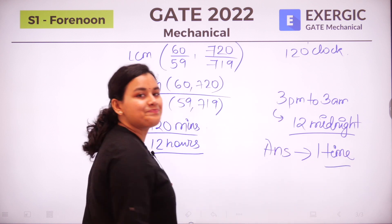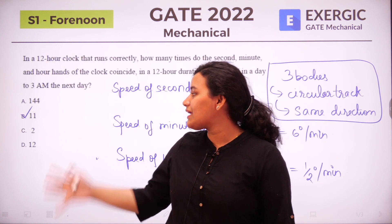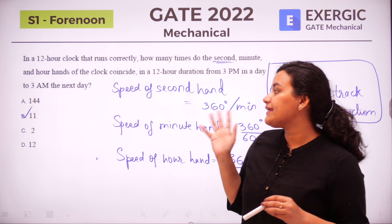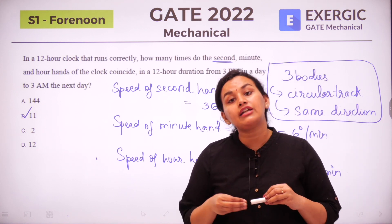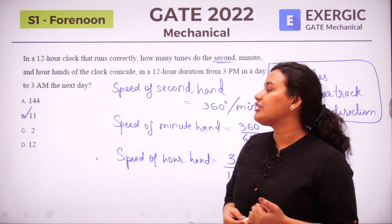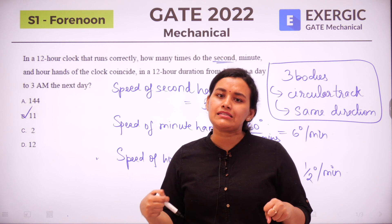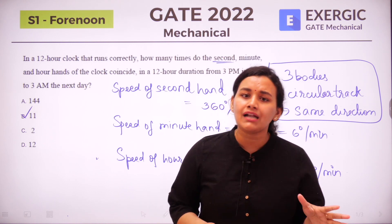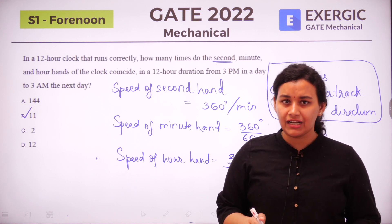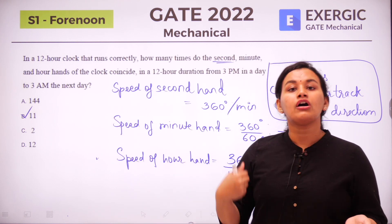So the correct answer is one time — only once in the 12-hour duration. This is a very interesting question asked by GATE, by IIT Kharagpur. Unfortunately, option 1 was not given in the choices; the options are 144, 11, 2, and 12. Because the correct answer of 1 is not among the options, this question is fundamentally wrong. If you include the second hand in the question, you must account for it in the solution — you cannot just say the answer is 11.